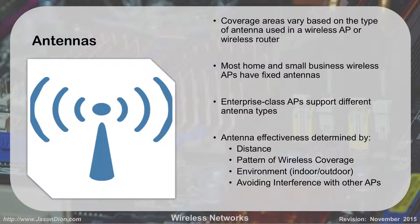With wireless networks, we need antennas to get the signal to and from the access point. Coverage area is based on the type of antenna used. Most homes and small businesses have a fixed antenna — they're placed in one position and stay there. In enterprise networks, you can have multiple antenna types based on your needs. Antenna effectiveness depends on how far you want to cover, the coverage pattern, and the environment — inside versus outside — since walls block connections. Interference with other access points can also cause issues, and we can use different antennas to shape our patterns.